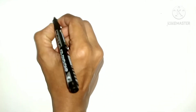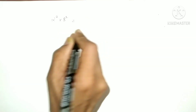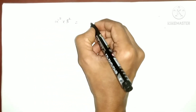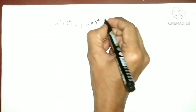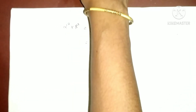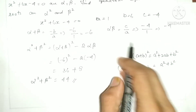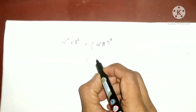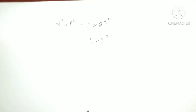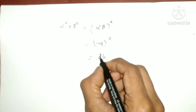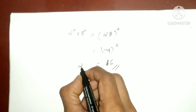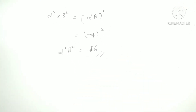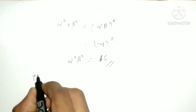Now we find the product of the new roots, which is alpha square times beta square. This equals (alpha times beta)² — and we already have alpha times beta equals minus 4. So (minus 4)² gives 16. So the product of these roots is 16.